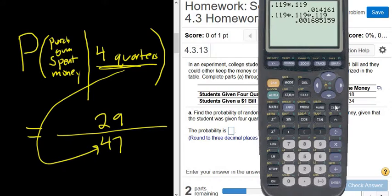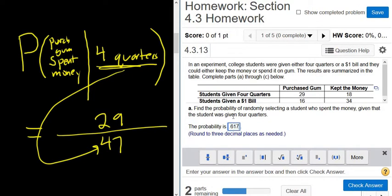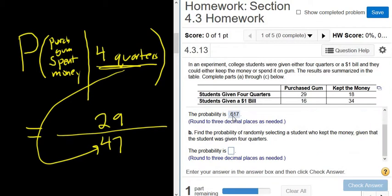Let's put that in the calculator. So 29 out of 47. .617, let's type it in, .617. Good stuff. So the answer to this one is .617.